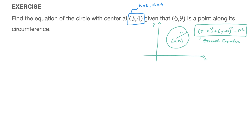What we are missing is the value of r, the circle's radius. To find it, we'll use the fact that we know the center and that we're given a point along the circle's circumference. That's step 1: find the radius r — and more importantly, the square of the radius r².